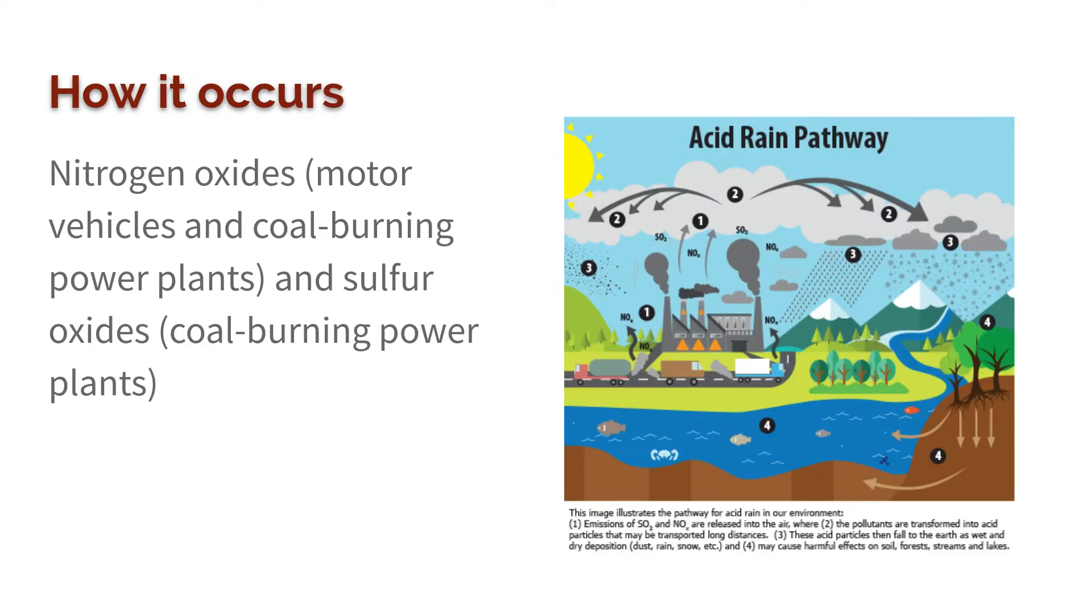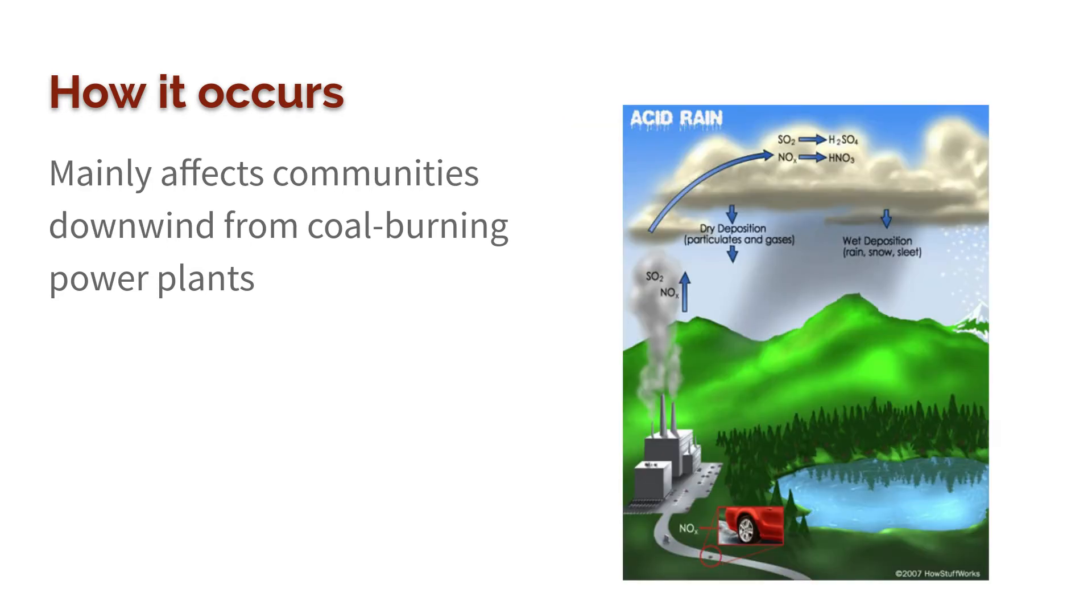Acid rain is a result of nitrogen oxides and sulfur oxides. Nitrogen oxides resulting from motor vehicles and coal-burning power plants react in the atmosphere mostly with water to create nitric acid, and sulfur oxides from coal-burning power plants react to form sulfuric acid. Then they'll rain down mostly in areas nearby the sources. Now that's not to say that those are the only places that experience acid rain, but it's most likely.